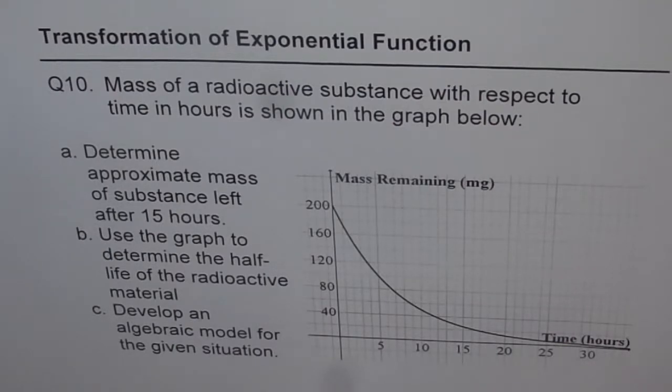Determine the approximate mass of the substance left after 15 hours, that's part A. Part B is use the graph to determine half-life of the radioactive material. And part C is develop an algebraic model for the given situation.